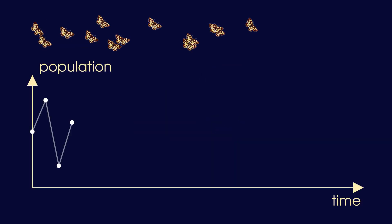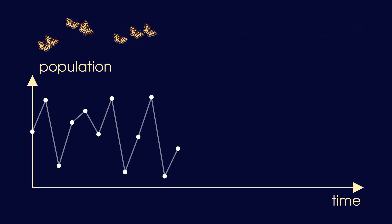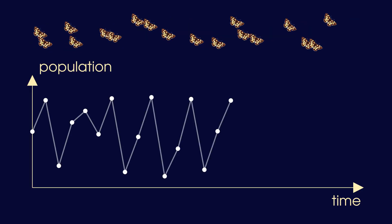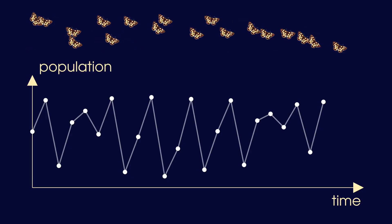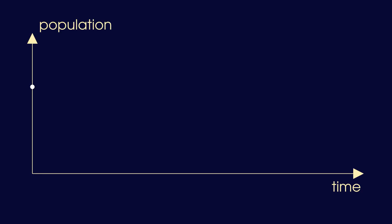The logistic map with r equal to 3.9 almost always produces chaos. But if we choose the initial value very carefully, we can find simple behavior. There is, for example, a stable population size which remains perfectly constant over the years.